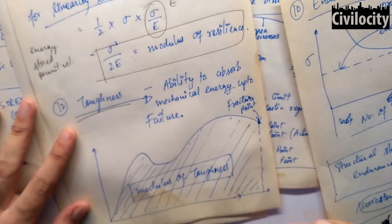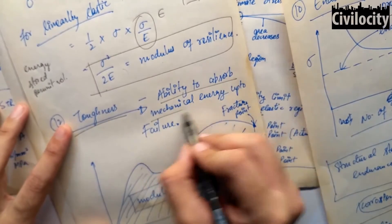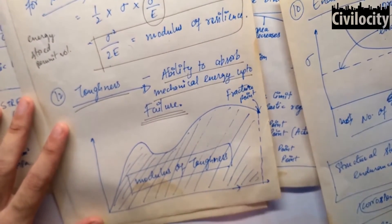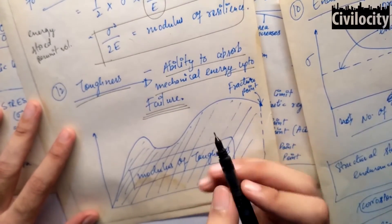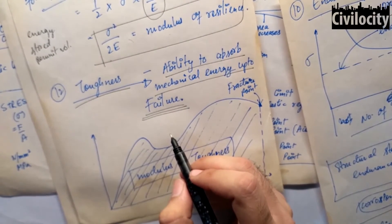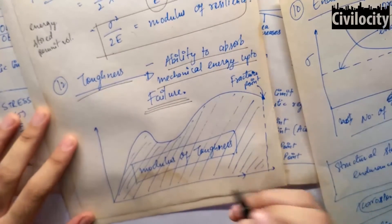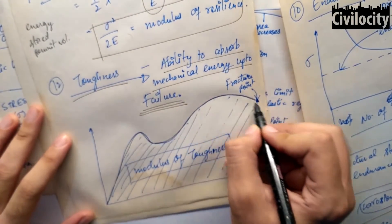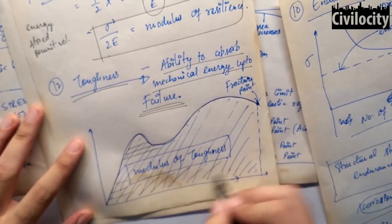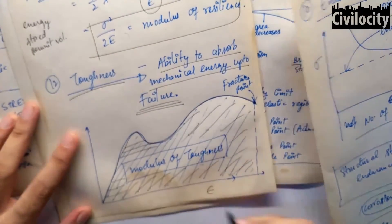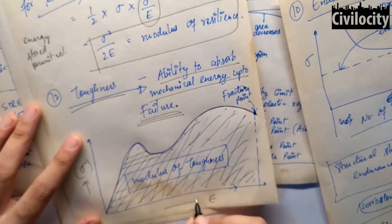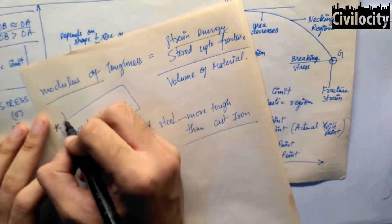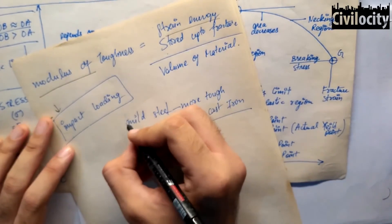Our next material property is toughness. Toughness is the ability of a material to absorb mechanical energy before fracture — how much mechanical energy it can absorb before failure. The ability to absorb mechanical energy up to failure is called toughness. Just as the area under the curve up to the elastic limit is the modulus of resilience, the modulus of toughness is the area under the curve up to the fracture point. It is measured as the strain energy stored up to fracture divided by the volume of the material. This property is most useful where we deal with impact loading. Do not confuse toughness with hardness.